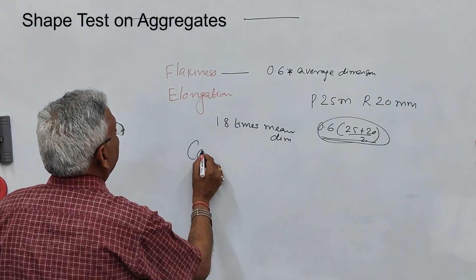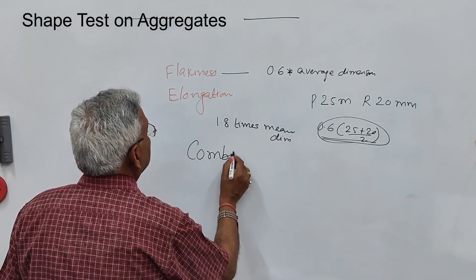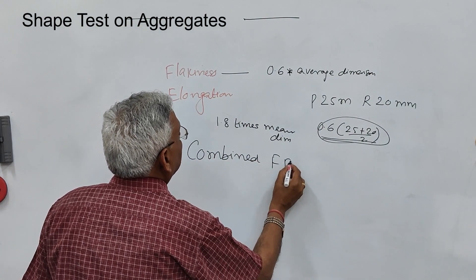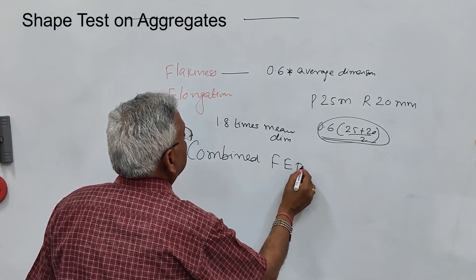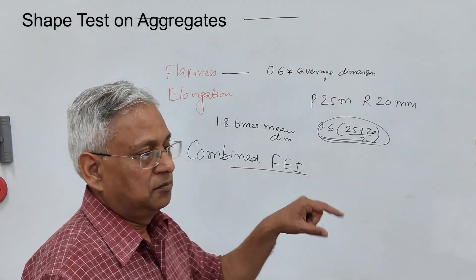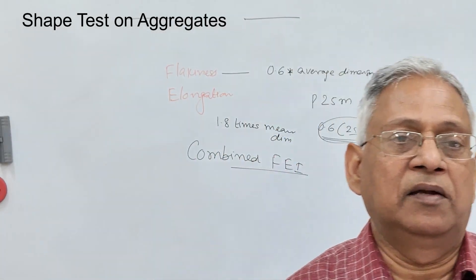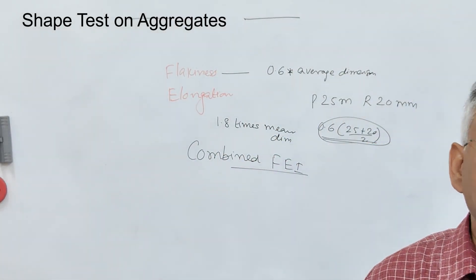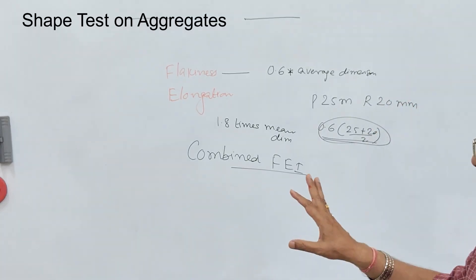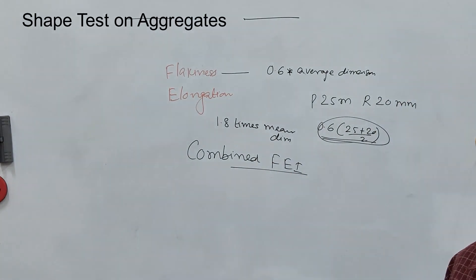For this reason, a limit is specified in the Ministry of Road Transport and Highway specification for a parameter called Combined Flakiness and Elongation Index (CFEI). Not individual indices but the combined value should not be more than 35% for aggregate to be used in any pavement layer.